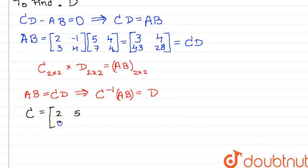Now, C is equal to 2, 5, 3, 8. Let us find C inverse. C inverse is equal to 1 by the determinant of C times 8, negative 5, negative 3, 2.